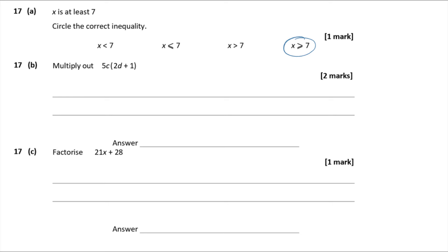Question 17b — multiply out 5c(2d + 1). Multiply both terms inside the bracket by 5c: 5c × 2d = 10cd, and 5c × 1 = 5c. So the result is 10cd + 5c.